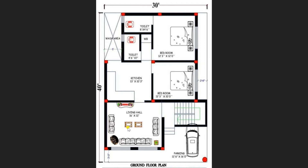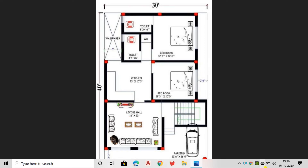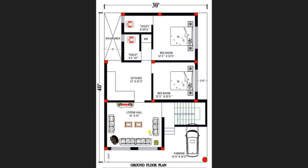I have entered into the living hall of a lavish dimension 16 feet by 12 feet. This is a very comfortable area. In the living hall we have plotted a sofa set along with a center table and an LCD. Now through the living hall I am entering towards the kitchen room.